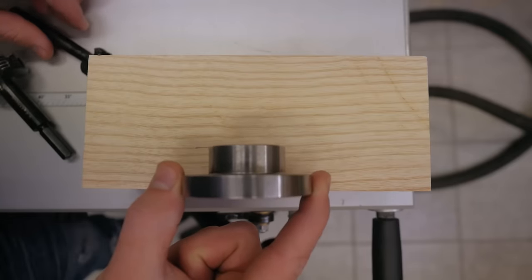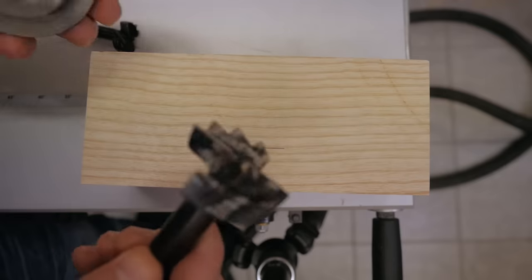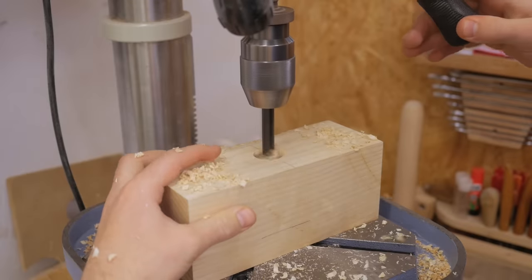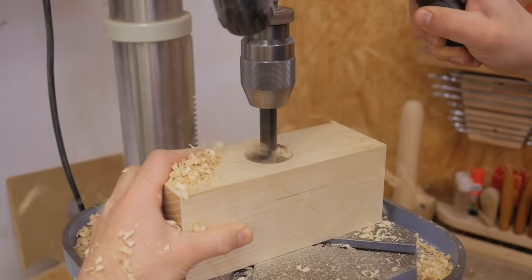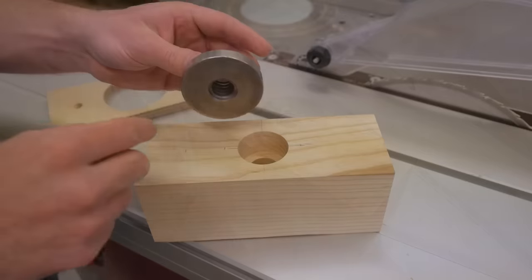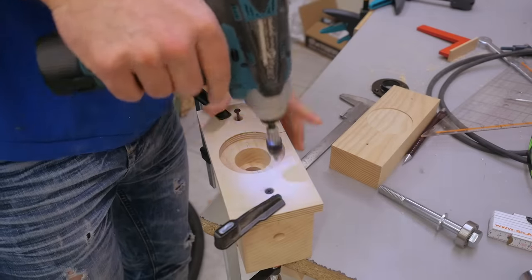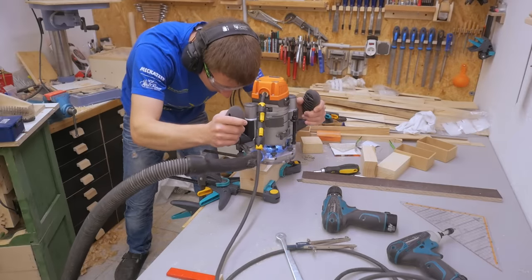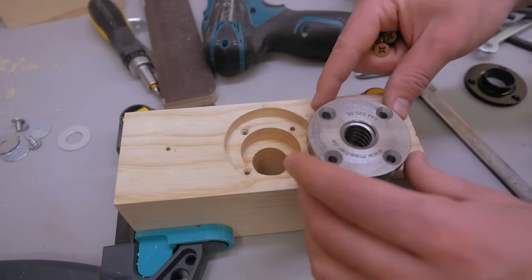The flange nut is about this thick so I'll drill with this bit from this side about to here. And then from the other side with this bit that's a bit bigger than the front section of the nut. Now the bigger diameter of the nut. Now I don't have a forstner bit that size so instead I made a template for a router with a guide bushing.